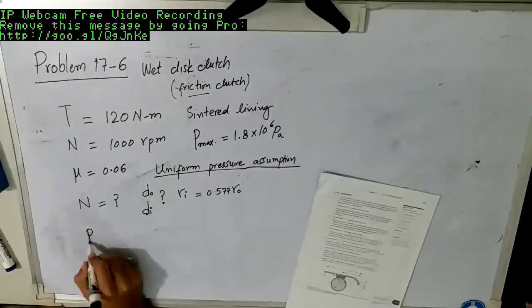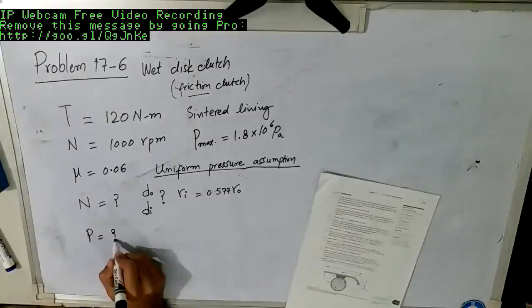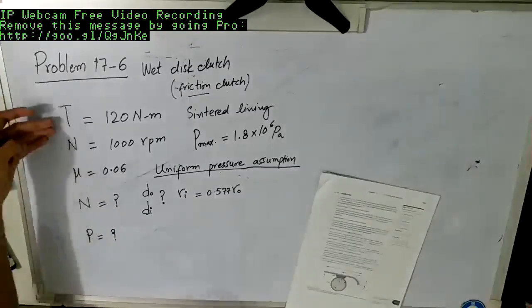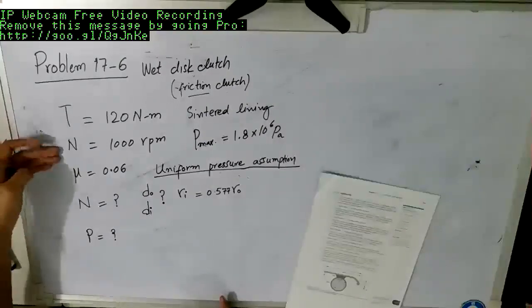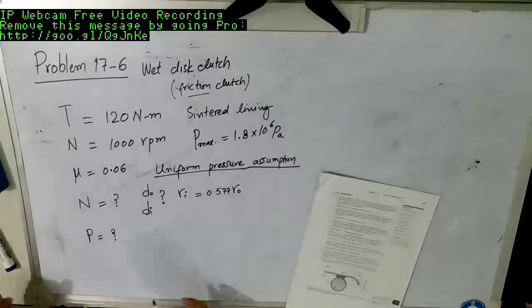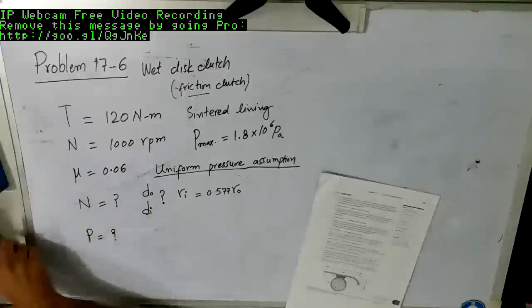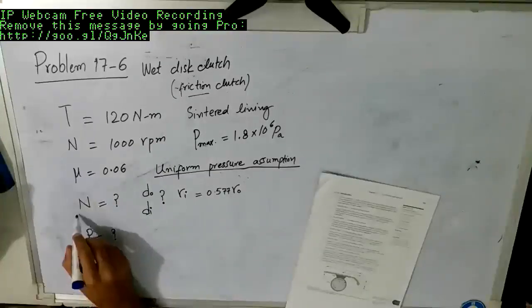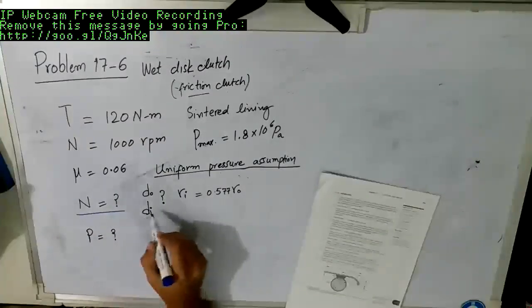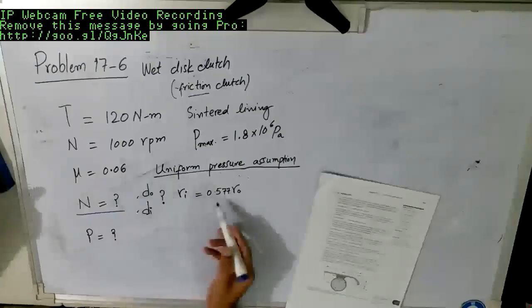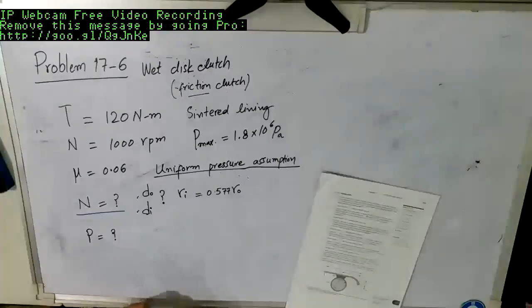So D outer and D inner are also required, while we are given the condition that the inner radius is 0.577 times the outer radius. This condition we already have studied in the theory. And lastly, we also need to find out the power transmitted.